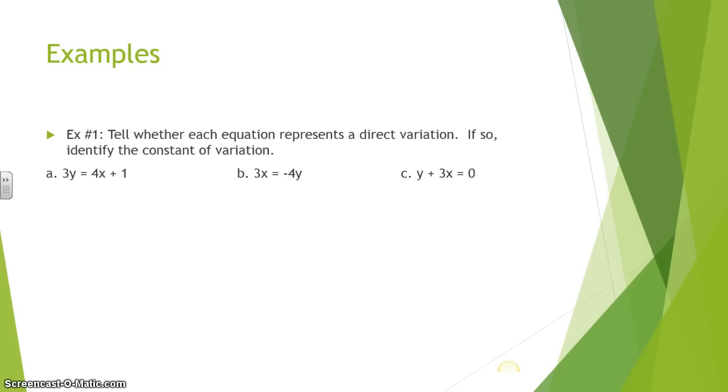For first example, it says tell whether each equation represents a direct variation. If so, identify the constant of variation. So the first example here, it's in the form of 3y equals 4x plus 1, and we need to determine if this represents a direct variation in the form of y equals k times x. So looking at this, can we put this in the form of y equals k times x? Well, we can't because we have this plus 1 right here, and this plus 1 gets in the way of putting this equation into the form of y equals k times x. So for this situation, we would say no, this equation does not represent a direct variation.